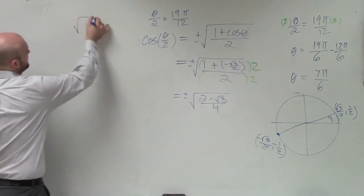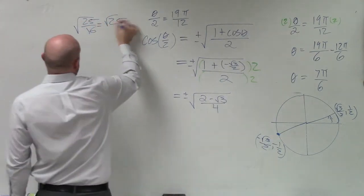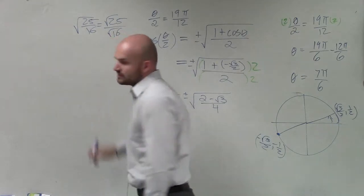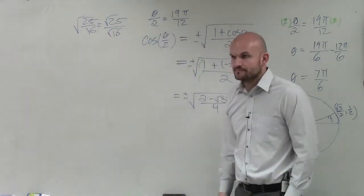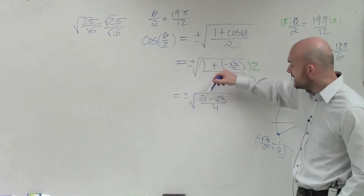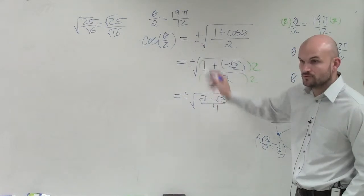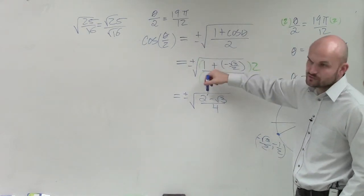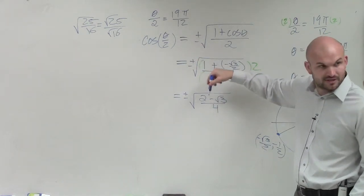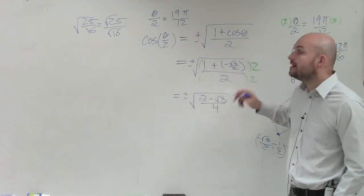One thing I want to remind you guys of: if I have the square root of 25 over 16, that's the same thing as the square root of 25 over the square root of 16. So I can take the square root of the numerator and I can take the square root of the denominator. I can't take the square root of 2 minus the square root of 3, because the square root does not distribute across addition and subtraction. However, Connor, I can take the square root of 4.